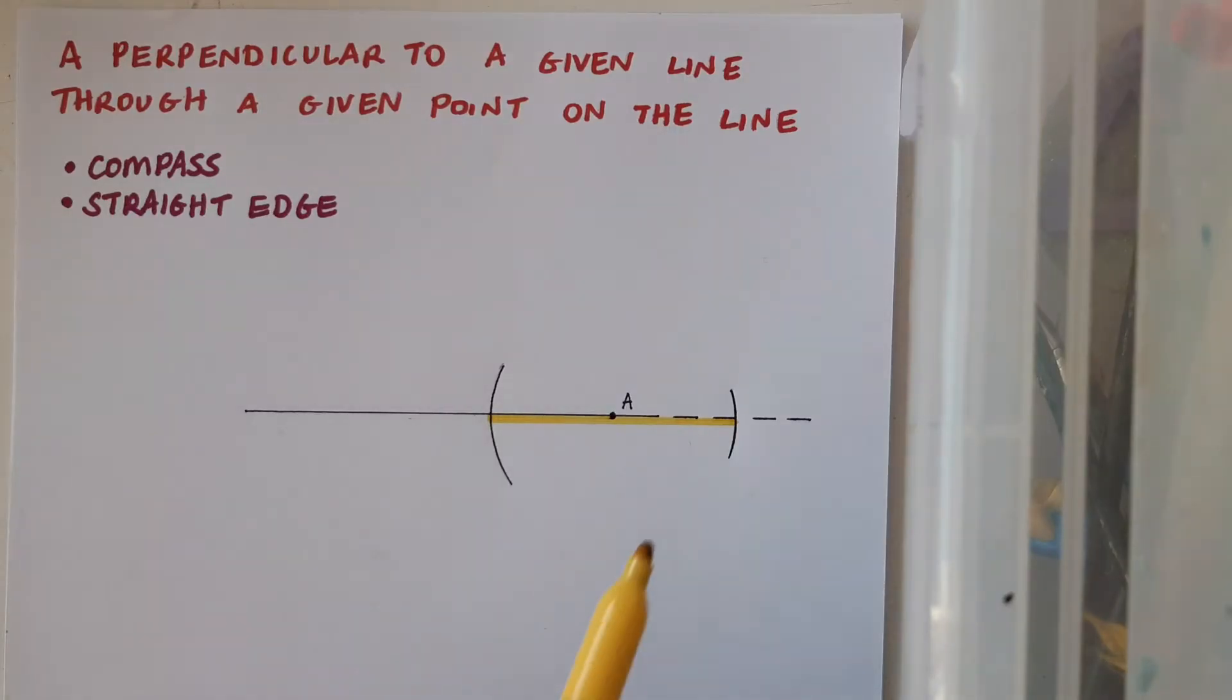By doing this I've created a section of the line where A is right in the middle. So now to complete my construction all I need to do is just focus on this portion of the line and construct the perpendicular bisector as normal.